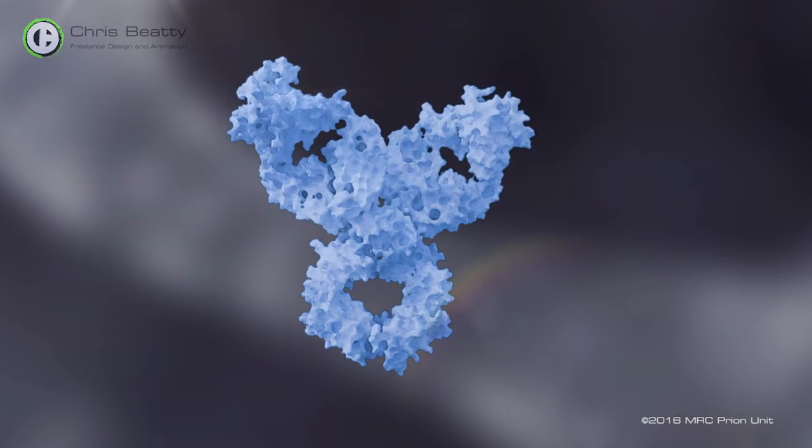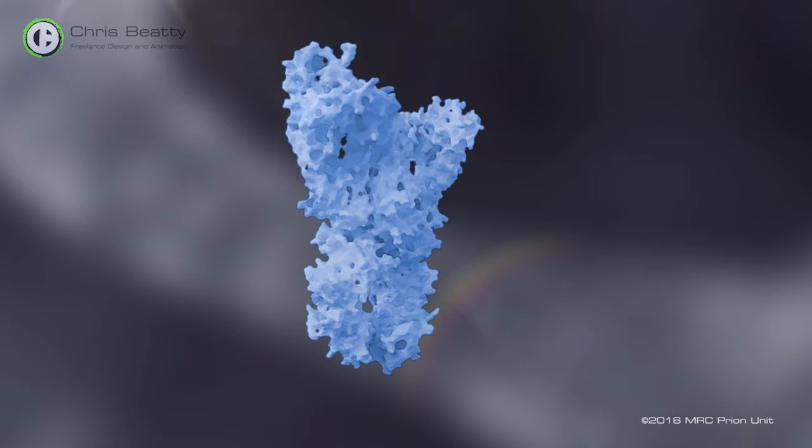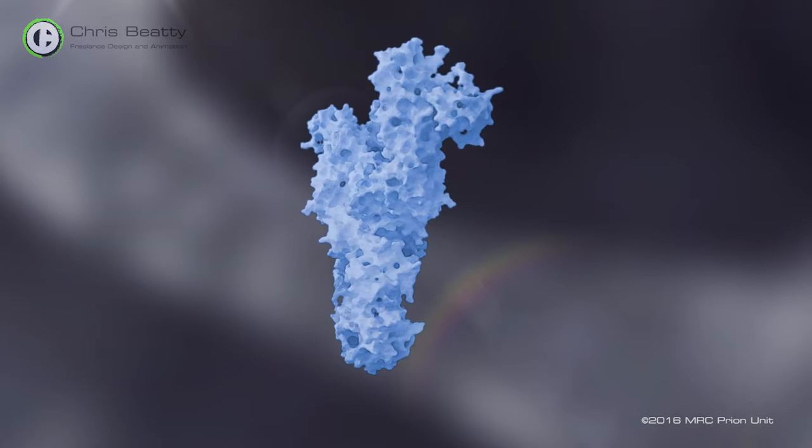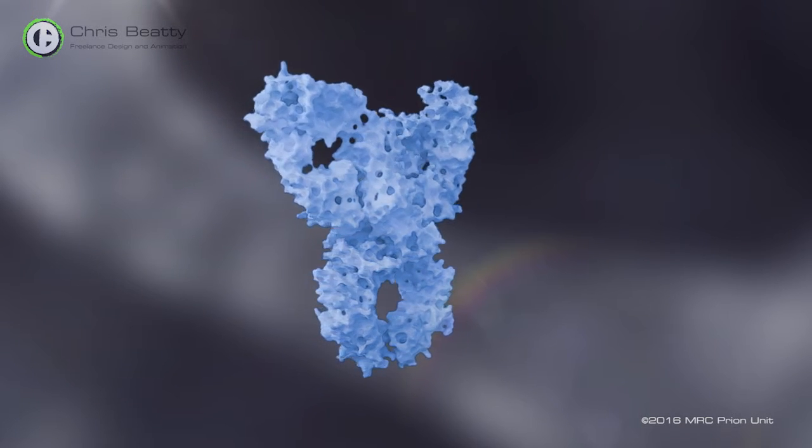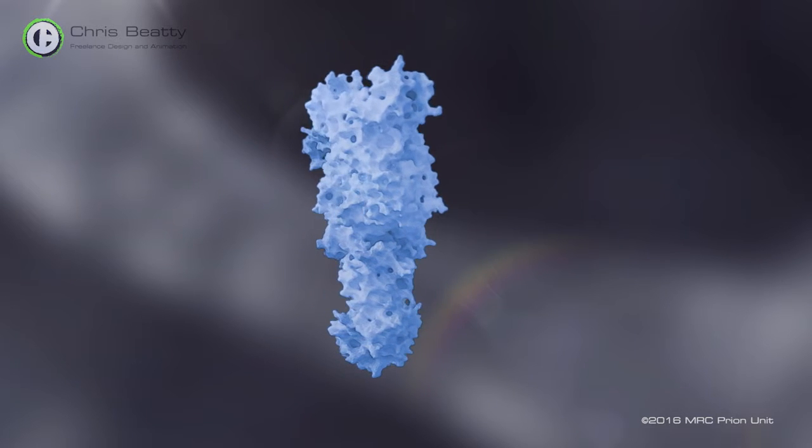The human body normally produces molecules called antibodies to fight infections from germs that invade the body. However since prions are formed from one of the body's own normal proteins in the case of CJD our immune system does not do this.